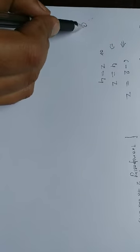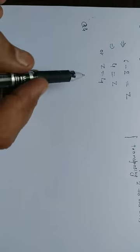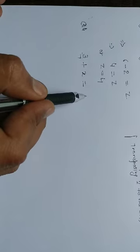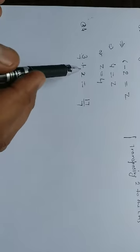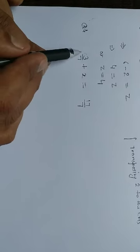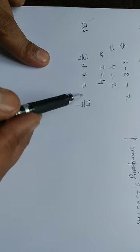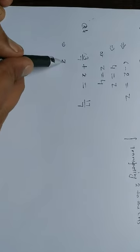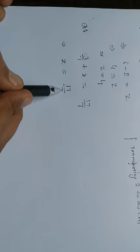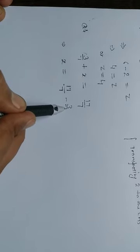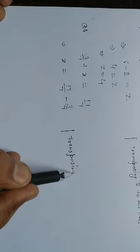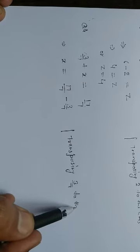Question number 4: 3 upon 7 plus x is equal to 17 upon 7. We have to find the value of x. Transposing 3 upon 7 to the right hand side, it becomes minus 3 upon 7. So x is equal to 17 upon 7 minus 3 upon 7, which gives x equal to 2.